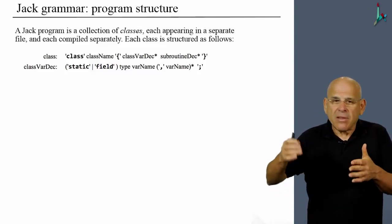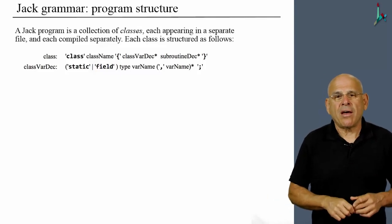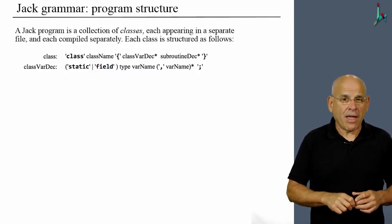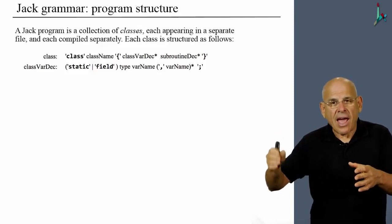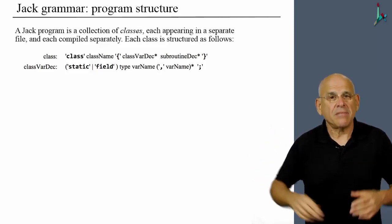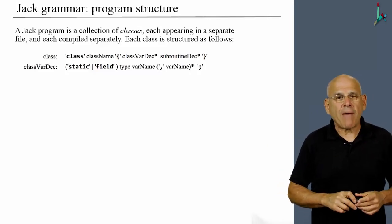And then I might have zero or more comma-separated additional variable names. So I can have something like static int x comma y comma z. Now this definition here will conform to this grammatical rule.